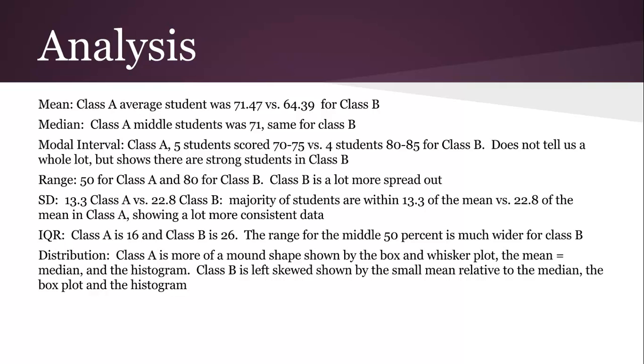The range is 50 for class A and 80 for class B. Class B is a lot more spread out. Standard deviation, so a lot of people struggle with this. Standard deviation, back to the normal distribution, it means the majority of students are within 13.3 from the mean for class A and 22.8 for class B, showing a lot more consistent data.